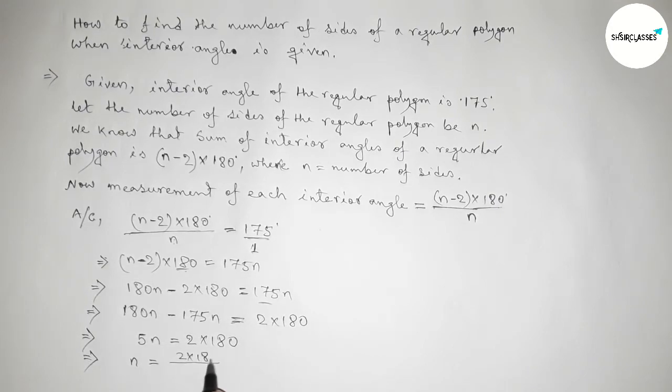Here 5 will divide 2 × 180. Dividing both numbers by 5, we get 360 divided by 5. Multiplying 2 × 36, we get n equals 72.